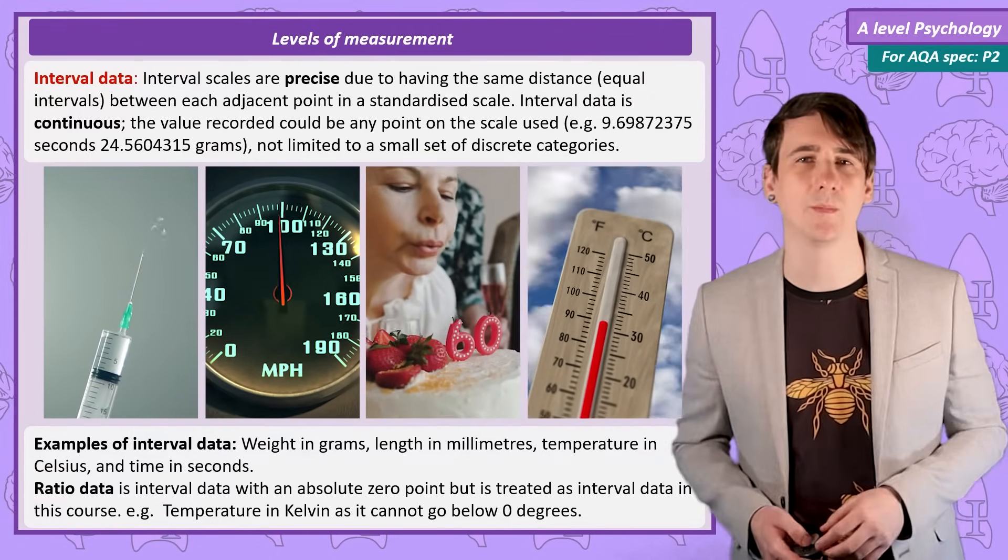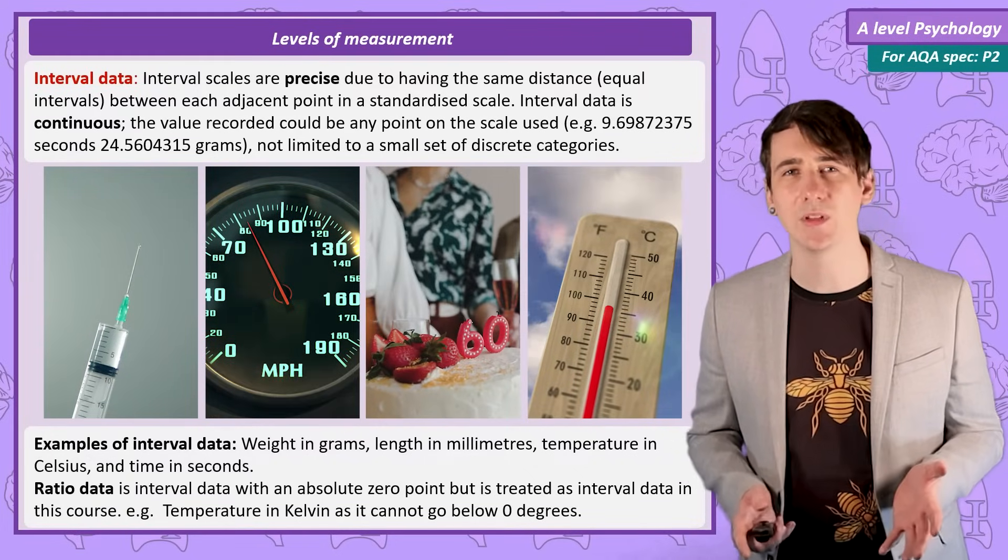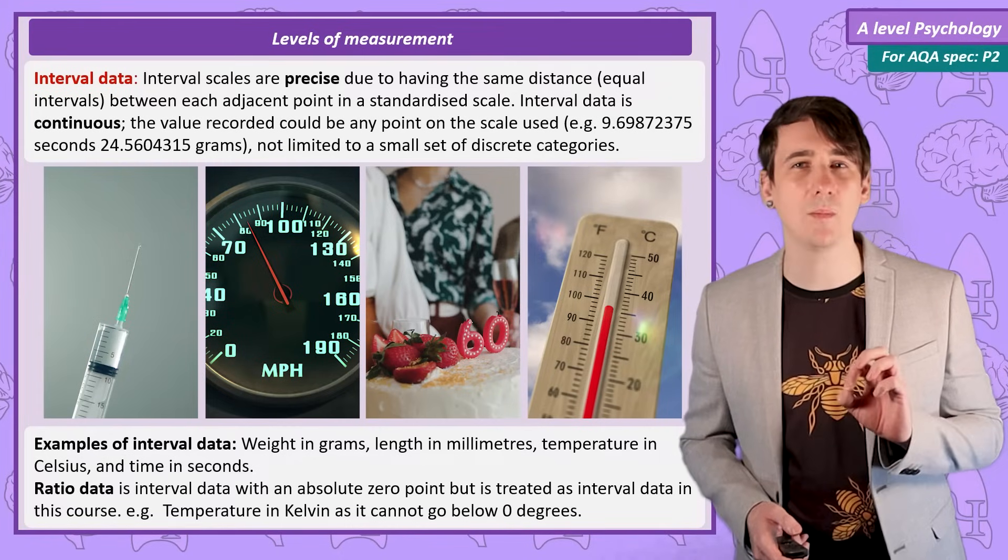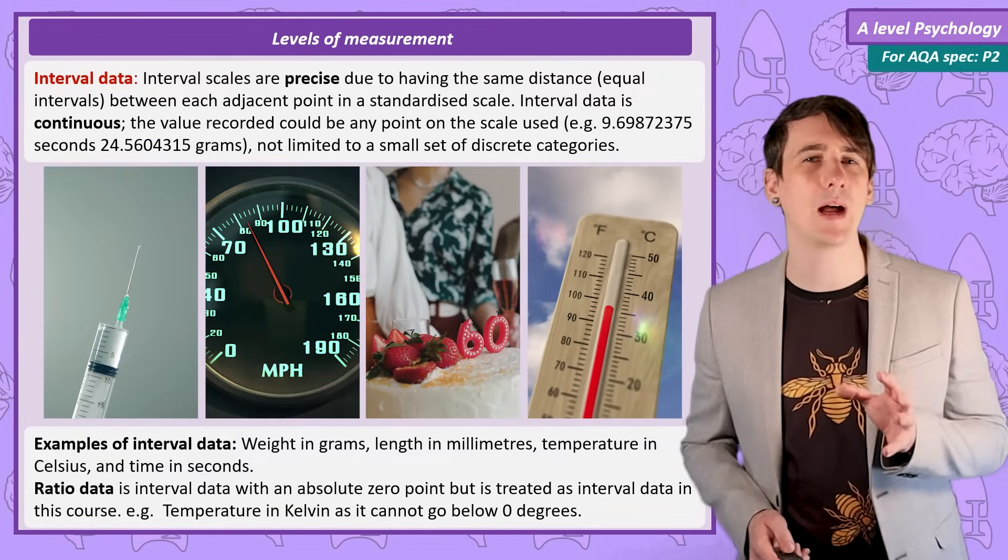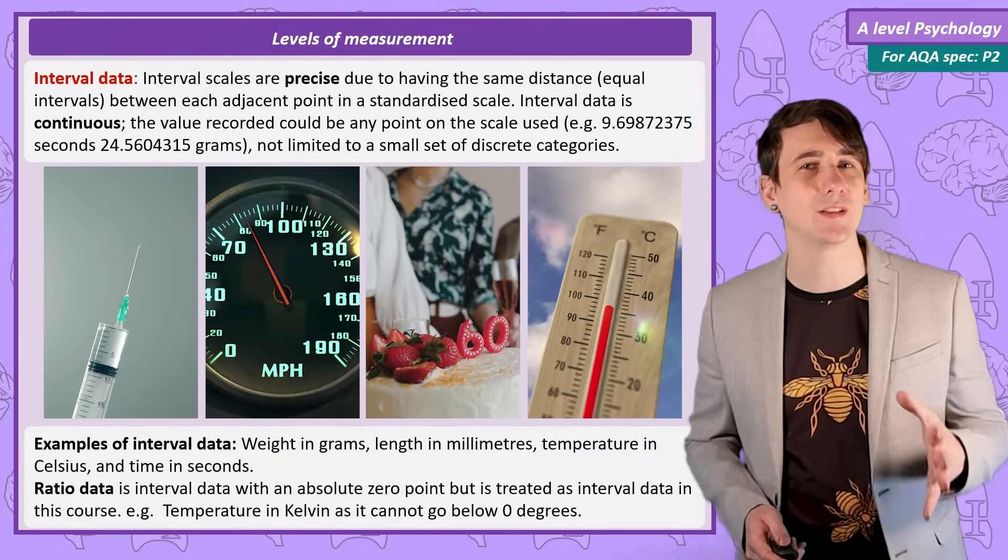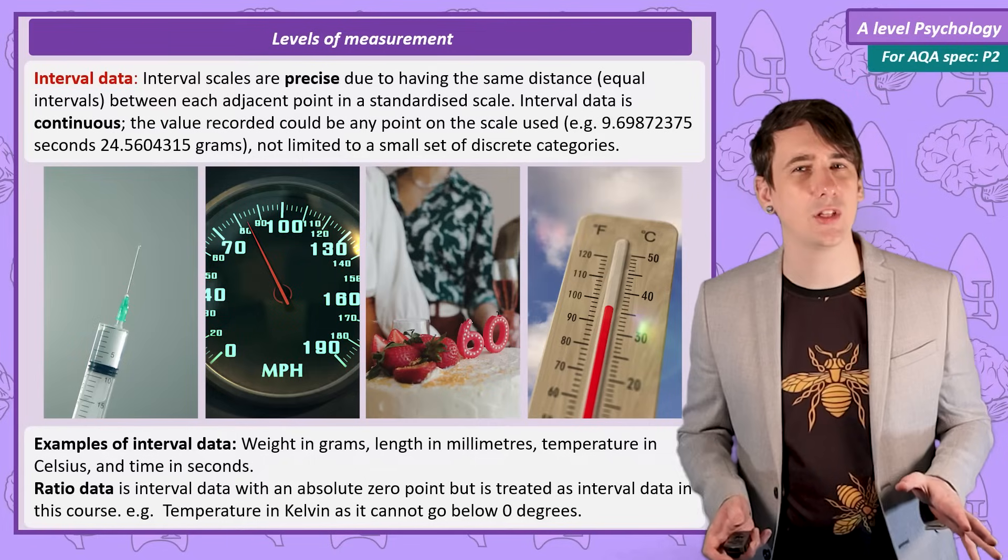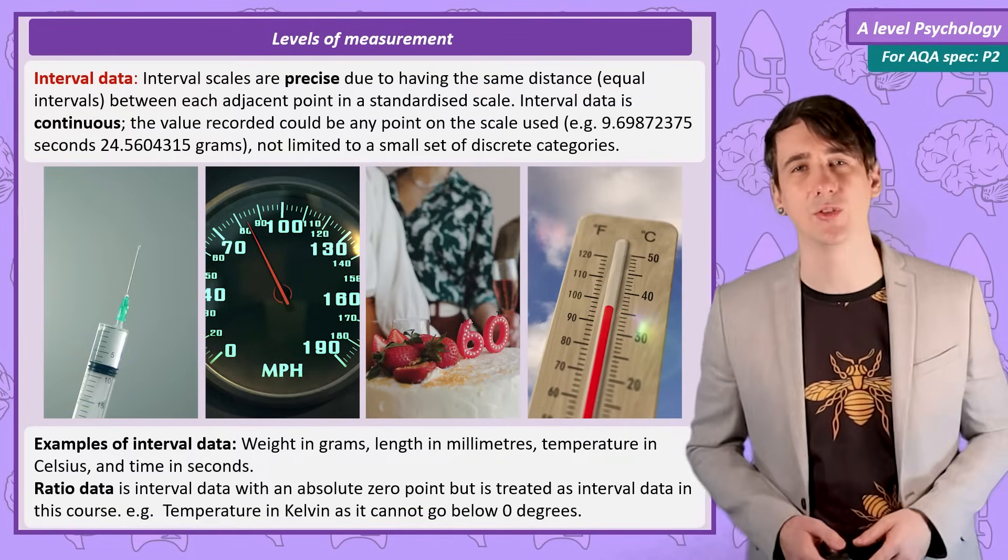Ratio data is interval data with an absolute zero point, so time in seconds and length in millimetres. For both of these scales you can't measure less than zero. However temperature in degrees centigrade can be minus degrees, so it is interval as the difference between each degree is the same, but it is not ratio. But for AQA A level psychology you don't need to worry about that, we always treat ratio data as interval data.